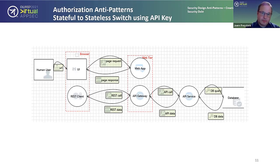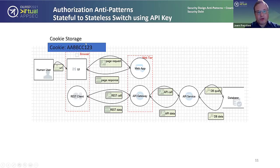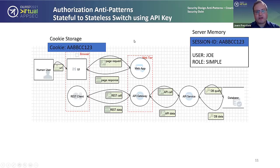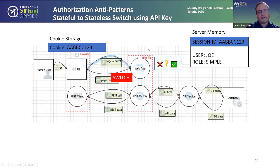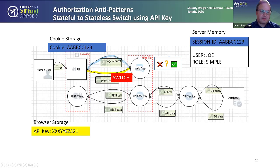Keep in mind broken access control is number one on the OWASP list, and that's there for a reason. In this setup, the cookie is sent over to the server; we have the go/no-go check on the web application. What happens next is what I call 'the switch' — a piece of code that transfers over a stateless API key for the REST client to use for subsequent calls. In our example we have a simple API key that needs to be known on both sides.